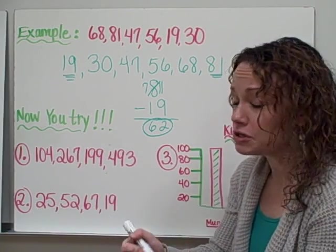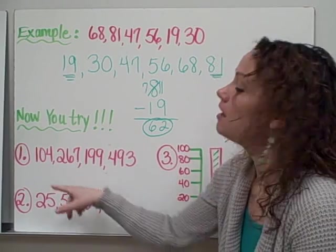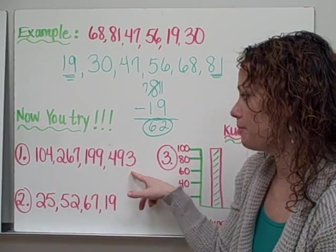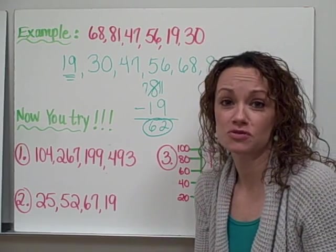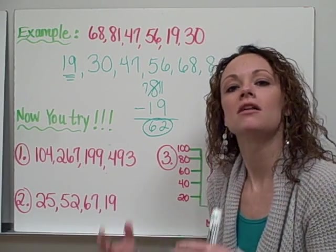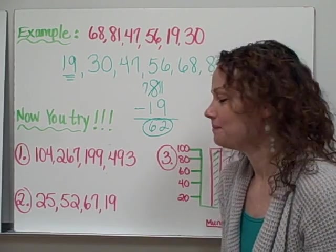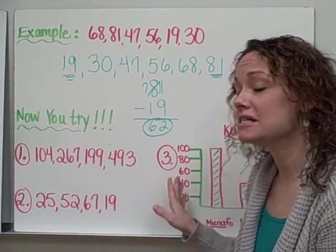All right, so now I would like you to try with these three examples. The first example is just a set of numbers, as well as the second example. As long as you remember to order those numbers from least to greatest, and then subtract the largest number from the smallest number, you should be fine. Example 3 is a little bit different.